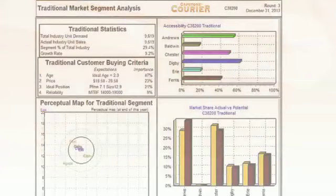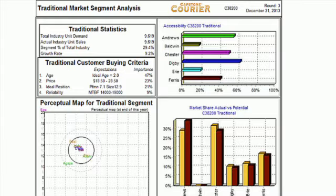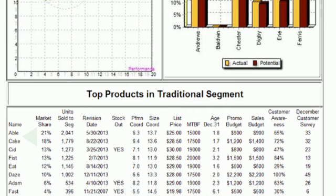Let's look at a simulation from another school. Here are the top products in the traditional segment for Round 3. Looking at the segment results, we'll focus on Able and Cake. They're the top two. What product advantages can we see for each? Well, Able outsold Cake by about 250,000 units during the year. So it's got a lot going for it right now. And both products are significantly better than the others in the segment.